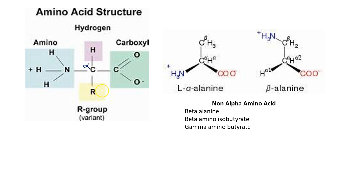In certain amino acids, the amino group is joined to a carbon atom which is not the alpha carbon atom. For example, in beta alanine, the amino group is attached to the beta carbon. Such amino acids are called non-alpha amino acids. Most amino acids in the body are alpha amino acids. Non-alpha amino acids include beta alanine, beta amino isobutyrate, and gamma amino butyrate.